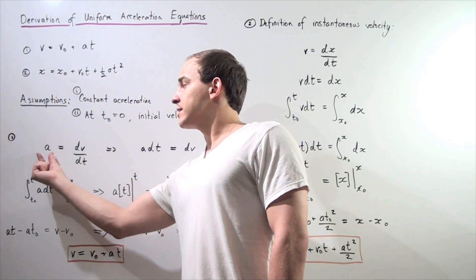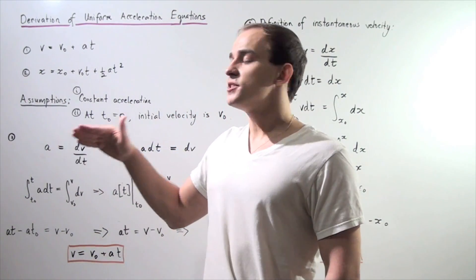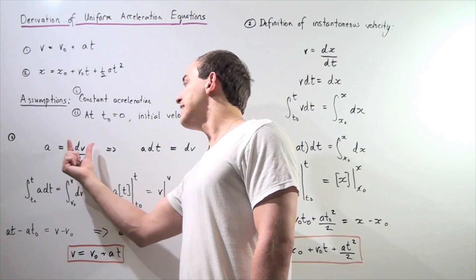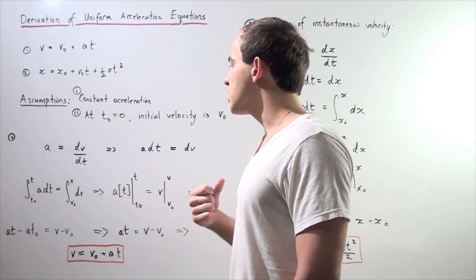Our instantaneous acceleration is equal to the derivative of the velocity function with respect to time. So A equals the ratio of infinitely small change in velocity divided by infinitely small change in time.